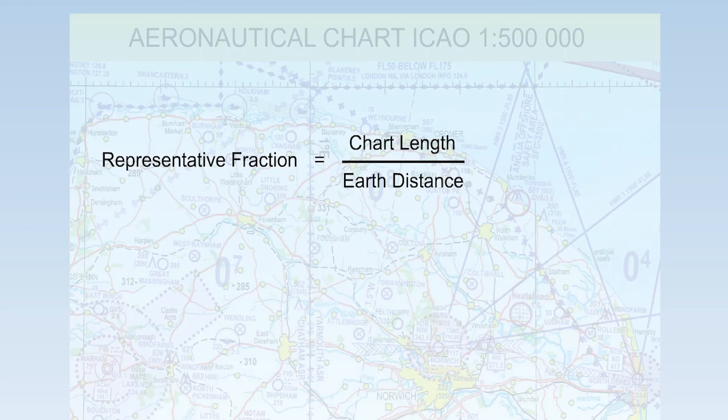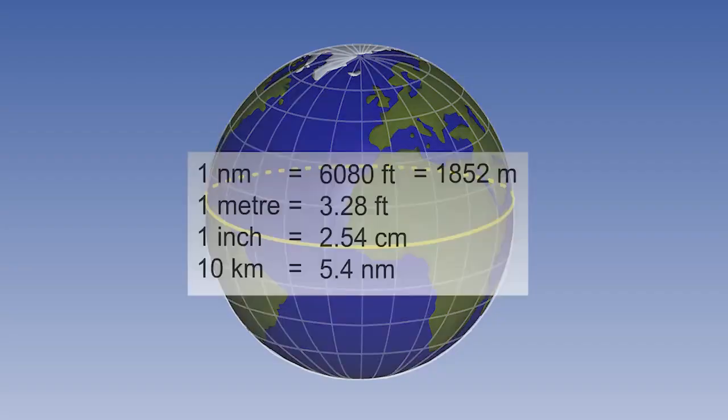The basic equation is representative fraction equals chart length over earth distance. When using a representative fraction, you must ensure that both the numerator and the denominator are in the same units. Remember the following conversion.